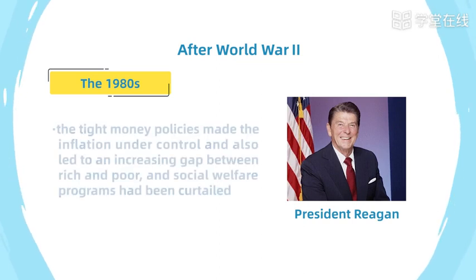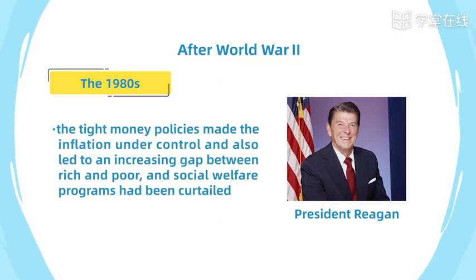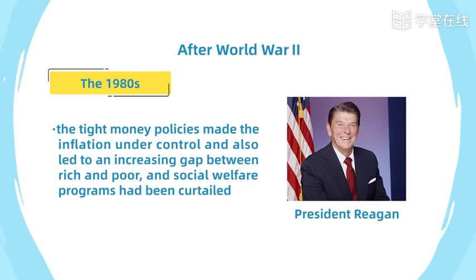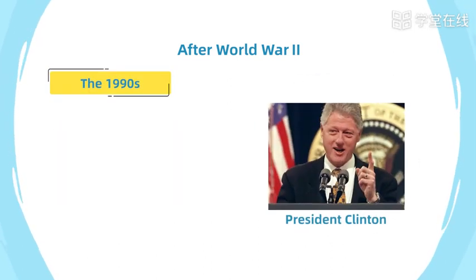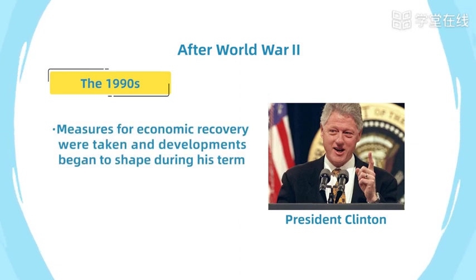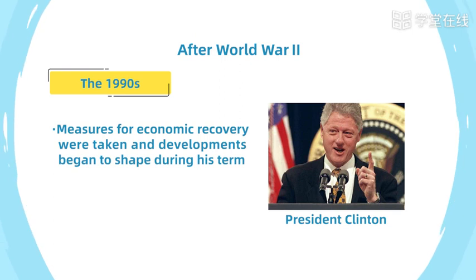The 1980s witnessed President Reagan's tight money policies, which brought inflation under control. However, the policies also led to an increasing gap between rich and poor, and social welfare programs were curtailed. In the 1990s, President Clinton acted on many important issues — measures for economic recovery were taken, and his second term saw vigorous economic development.